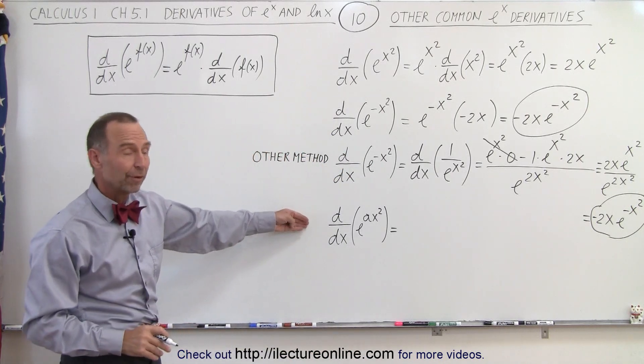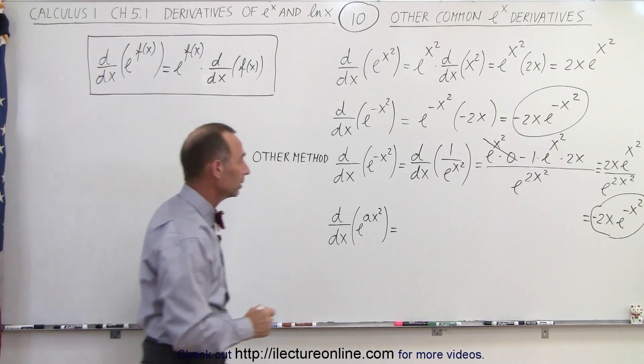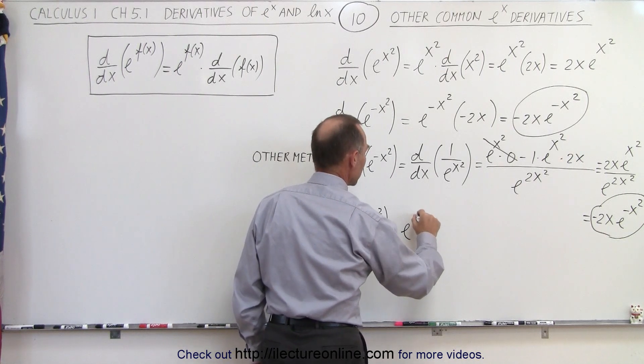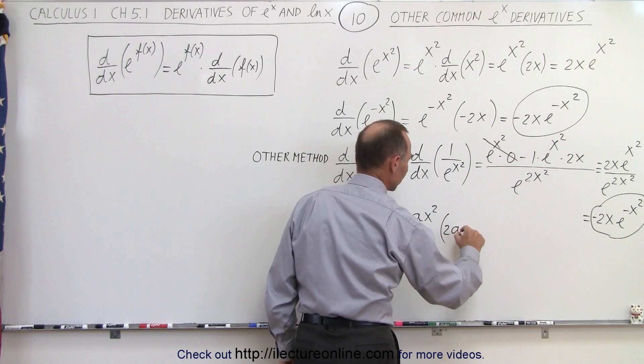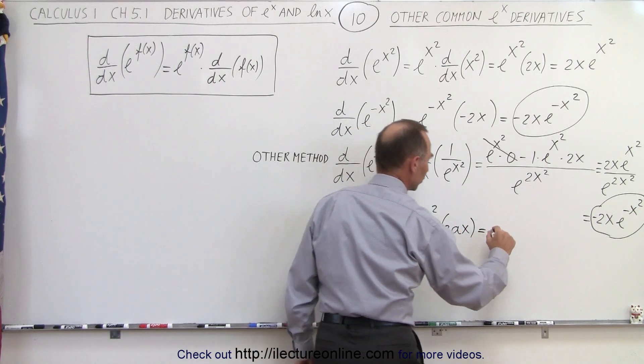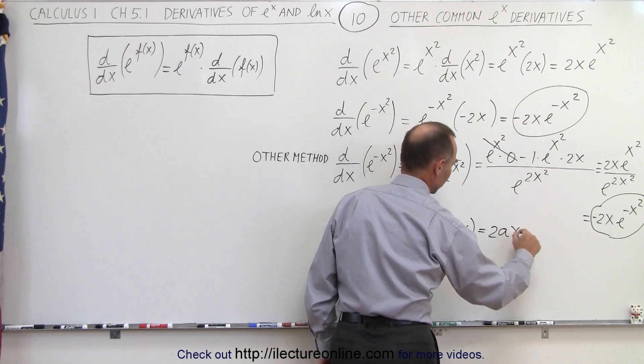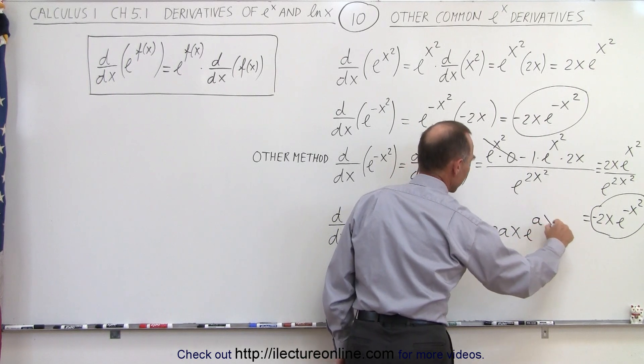And finally, when we take the derivative of e to the ax squared, that becomes e to the ax squared times the derivative of the exponent, which is 2ax. So this becomes equal to 2ax e to the ax squared.